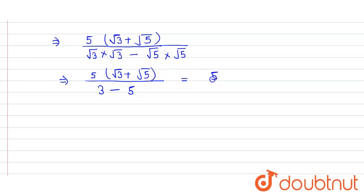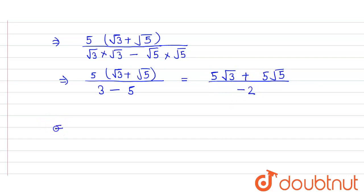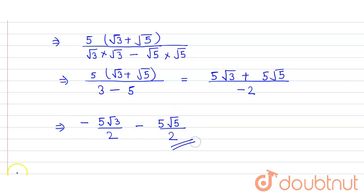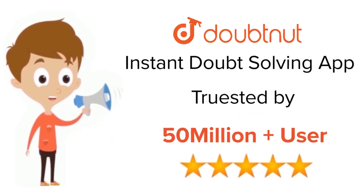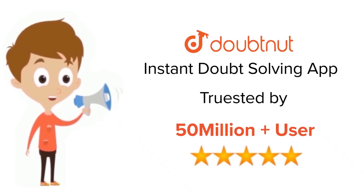So we get 5 multiplied by the bracket, giving us 5 root 3 plus 5 root 5, divided by minus 2. So our answer is minus 5 root 3 divided by 2, minus 5 root 5 divided by 2. For class 6 to 12, IIT JEE and NEET level, trusted by more than 5 crore students — download the Doubtnut app today.